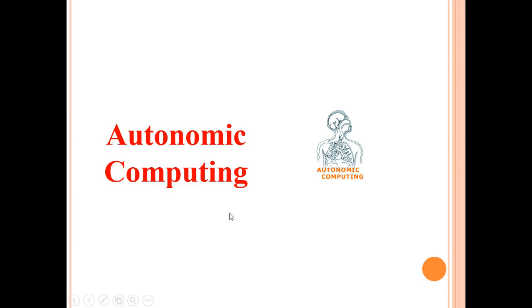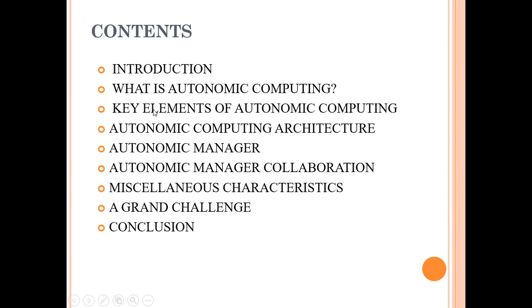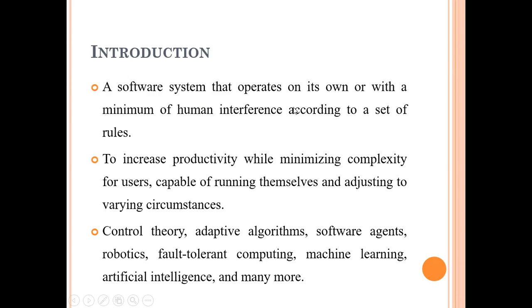Let's talk about autonomic computing. We will see what is autonomic computing, the key elements of autonomic computing, the autonomic computing architecture, the autonomic manager, autonomic manager collaboration, various characteristics, and a grand challenge, finally concluding. Let's start with the introduction. A software system that operates on its own or with a minimum of human interference according to a set of rules.